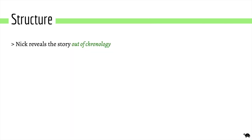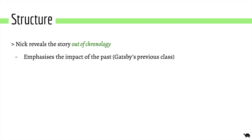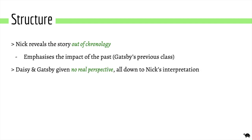I've touched on structure already, but it's worth recounting its impact. The story is out of chronology, with the narrative constantly jumping between past, present, and future, and the whole novel is told from Nick reflecting back. This emphasises the impact of the past — in this case, Gatsby's lower class history as James Gats. Daisy and Gatsby are given no real perspective; it's all down to Nick's interpretation. Nick claims to be unbiased, yet his descriptions of Tom, Daisy, and Myrtle are incredibly biased, and the high romanticism he applies to Gatsby really changes your analysis when you consider it all coming from one man's perspective.